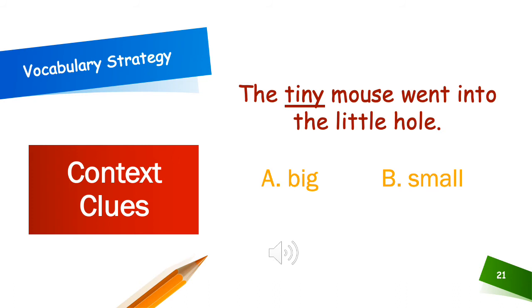Now you try this one. The sentence reads, The tiny mouse went into the little hole. Is it A big or B small? The big mouse went into the little hole or the small mouse went into the little hole? Yeah, B, the small mouse went into the little hole. So tiny means small.